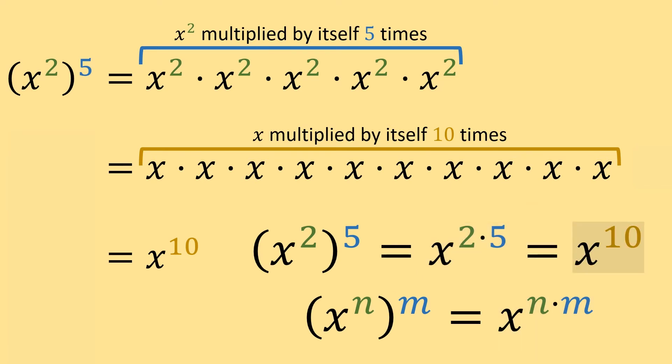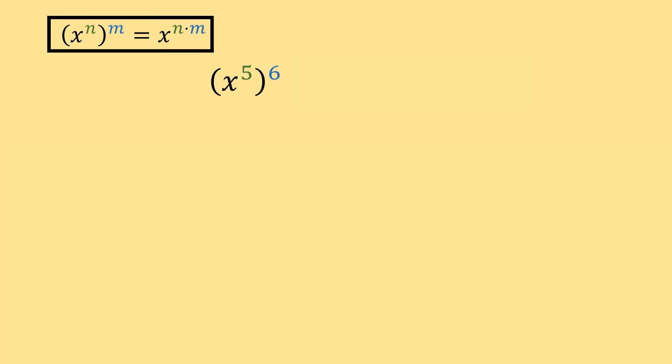So let's work with a few more examples. Say we wanted to rewrite x to the fifth power raised to the sixth power as x raised to one number using this rule. Using the rule, we could rewrite x to the fifth raised to the sixth as x to the five times six, which is equal to x to the thirtieth power.